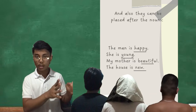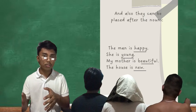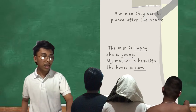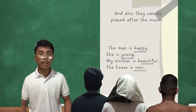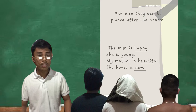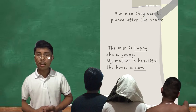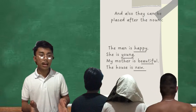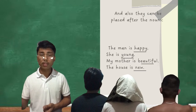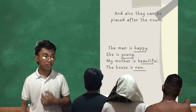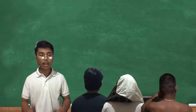Adjectives can also go after the nouns. For example: 'The man is happy' — the noun is 'man' and 'happy' describes him. 'She is young' — 'young' describes 'she.' 'My mother is beautiful.' 'The house is new.' You get that, class? That's very easy.